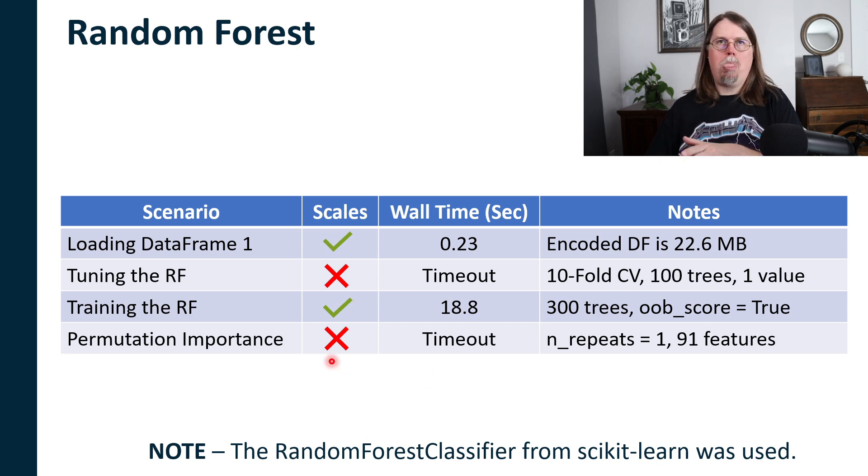And then permutation importance, nope, just did not work, right? Even just doing one repeat of 91 features just takes the computer way too long. So it's timed out. So this doesn't scale very well. And there are all the tests, right? Here are the numbers. Here are the methodology that I use. Here are the scenarios. So now we can get the verdict. So what's the bottom line? Can you do real data science in Python and Excel as of April 2024?